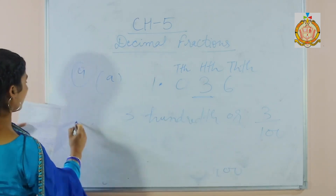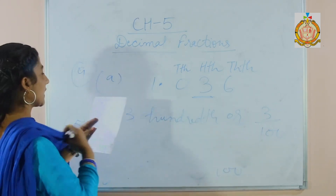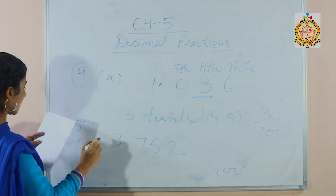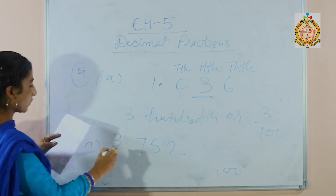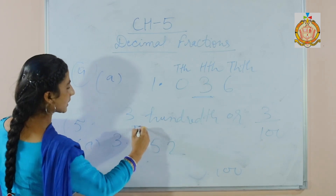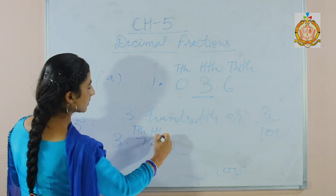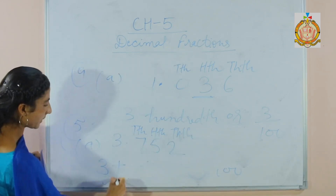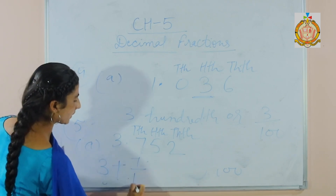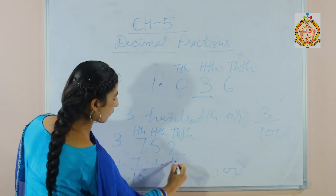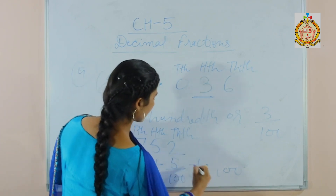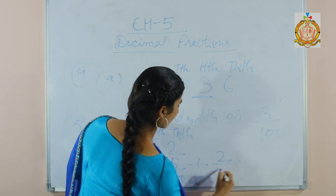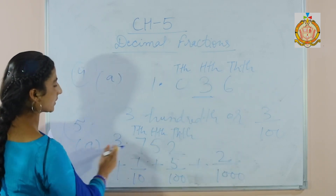Now 5th part: write the following decimals in expanded form. 3.752 — we have to change this into expanded form. First we write the place value of each digit: this is 10th, this is 100th, this is 1000th. So 3 is the whole number part. Write 3 plus 7 over 10, plus 5 over 100, plus 2 over 1000. So this is the expanded form of this decimal fraction.